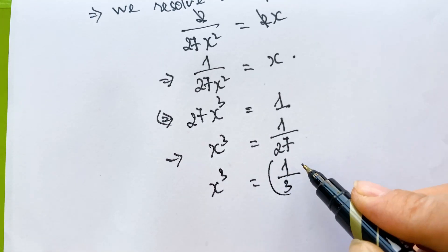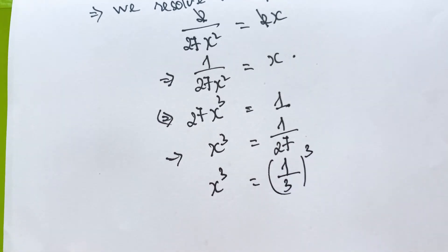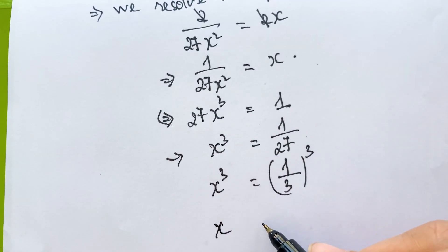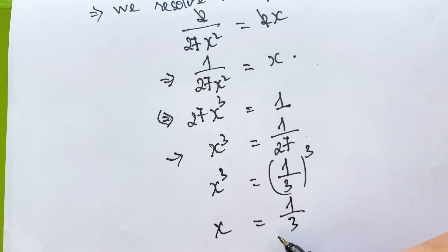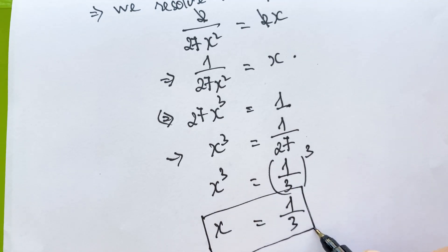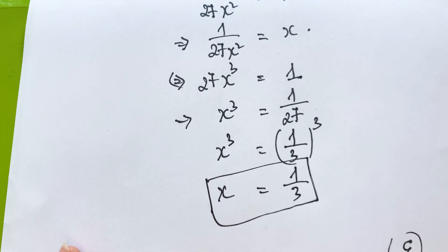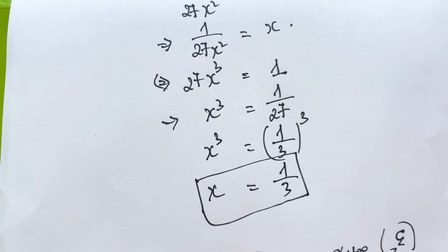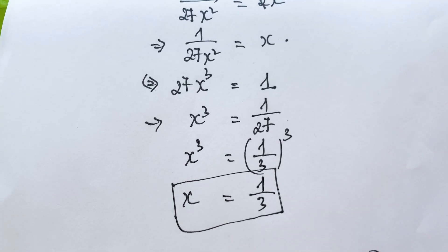So x cubed equals one third as a whole power cube, meaning x equals one third. That is the value of x in this equation. Thank you for watching my video — don't forget to subscribe to my channel. Love you all!